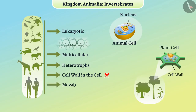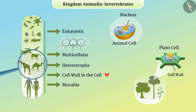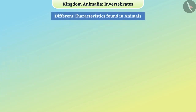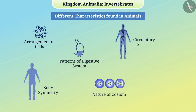Most animals are movable — that is, they can move from one place to another. Animals all around us are found with different body structures and different sizes. We can find similarities and classify animals based on different characteristics like arrangement of cells, body symmetry, patterns of digestive system, nature of coelom, circulatory system, and reproductive system.